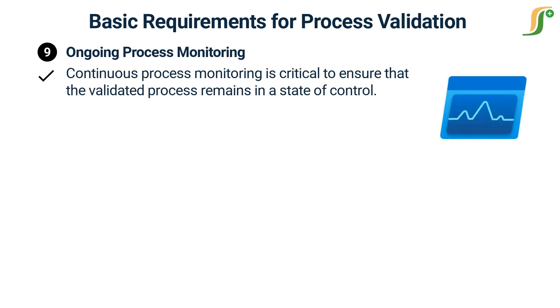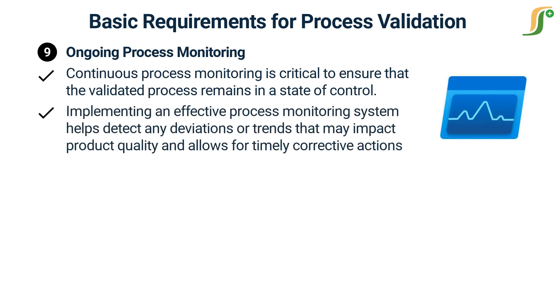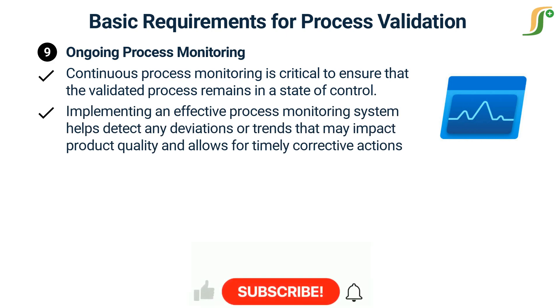Ongoing process monitoring: continuous process monitoring is critical to ensure that the validated process remains in a state of control. Implementing an effective process monitoring system helps detect any deviations or trends that may impact product quality and allows for timely corrective actions.